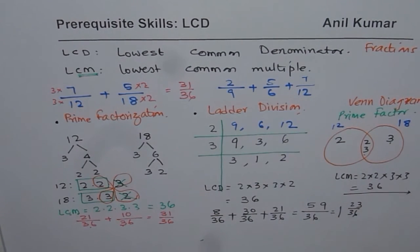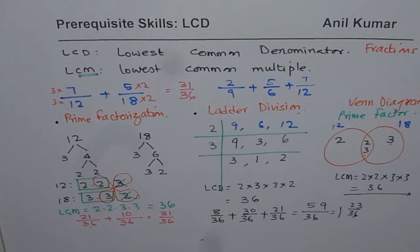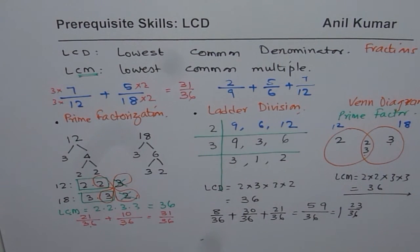That is another very important method to find lowest common multiples. When doing addition and subtraction of fractions, we normally call it lowest common denominator. I hope this video helps you bring all the things together. Thank you and all the best.